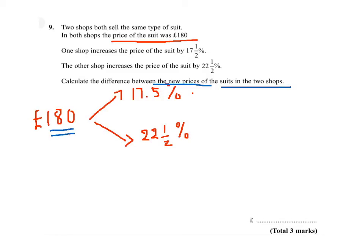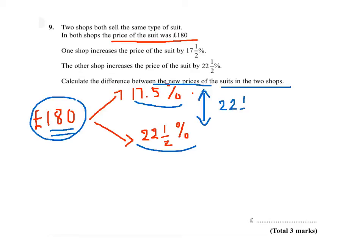The original price is £180. One is increasing by 17.5%, the other one by 22.5%. So the difference in the increases is 22.5% take away 17.5%, which gives a 5% difference in the increases.